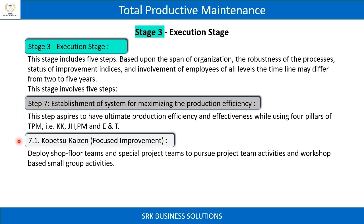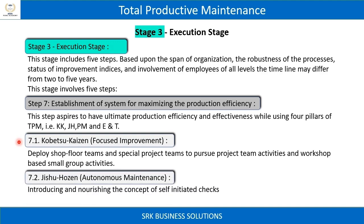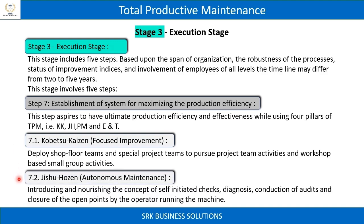7.1 Kobetsu Kaizen: Deploy shopfloor teams and special project teams to pursue project team activities and workshop-based small group activities. 7.2 Jishu Hozen: Introducing and nourishing the concept of self-initiated checks, diagnosis, conduction of audits, and closure of open points by the operator running the machine.